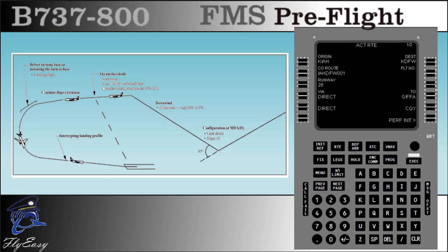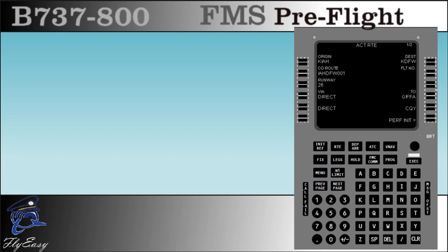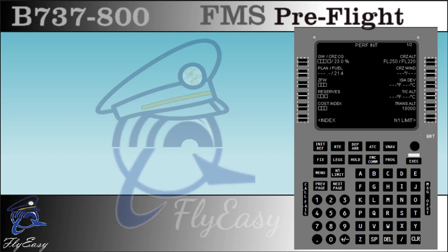You need to provide performance information to the CDU for VNAV operation. Press line select 6 right to go to the PERF INIT pages. This is the performance initialization or PERF INIT page. Enter data here to enable the FMS to calculate the efficient vertical profile. Although you access this page from the line 6 right prompt on the route page, you can also access it on the ground by pressing the INIT REF key. It is logical to fill this page from the bottom to the top. Cost index reflects the cost of fuel compared to other flight operating costs such as crew costs, maintenance, and depreciation. Values entered here range from 0 to 200. Higher cost index values are used for minimum flight time; lower cost index values are used for lower fuel consumption. Cost index now is 48 — enter the cost index value in the scratchpad and line select 5 left. Line 4 left is the reserve line; as a minimum, enter the fuel needed to fly to your alternate plus required reserve fuel.